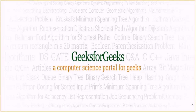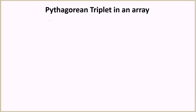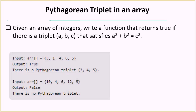Hello everyone and welcome to GeeksforGeeks. The problem we are going to see today is to find a Pythagorean triplet in an array. You will be given an array of integers and have to write a function that returns true if there is a triplet a, b, c which is a Pythagorean triplet — meaning it satisfies the condition that a squared plus b squared is equal to c squared.